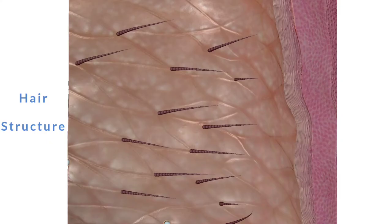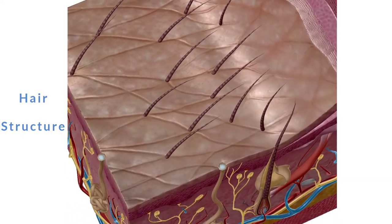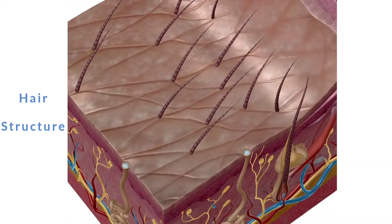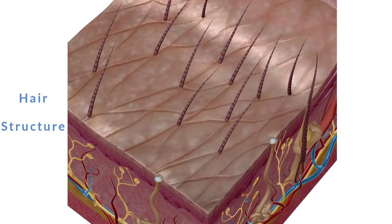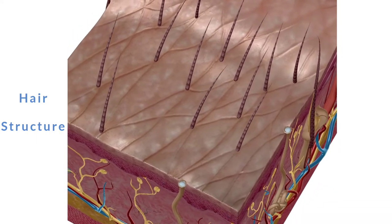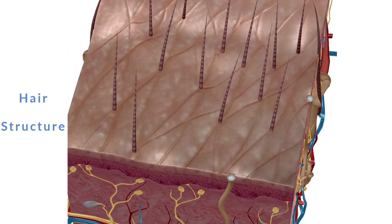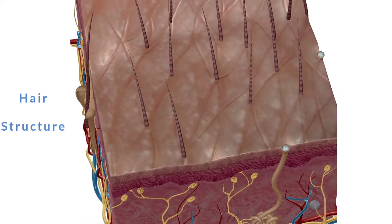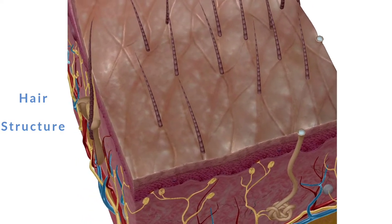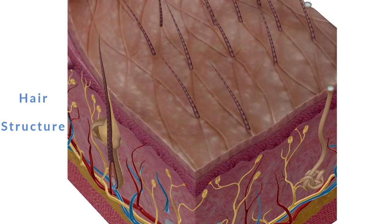Now come to the hair structure. Each hair consists of a root, a follicle, and a shaft. In the follicle, new hair cells develop and push existing cells upward. As the cells are pushed upward, they begin to form the shaft, which is made of dead keratinized cells.